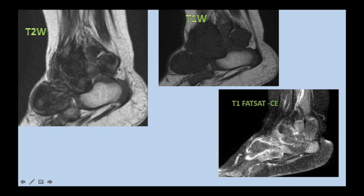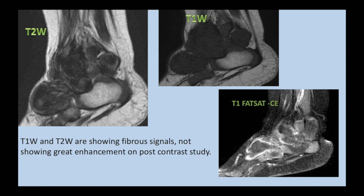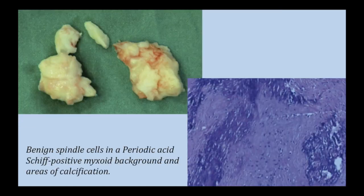We gave contrast, but the central part of most nodules is not showing significant enhancement. There is some peripheral enhancement at some nodules, but no intense homogeneous enhancement in the center. So we thought we are dealing with a fibrous tumor in a pediatric age group. Most of the tumor was excised and histopathology showed spindle cells associated with a myxoid background and areas of calcification.